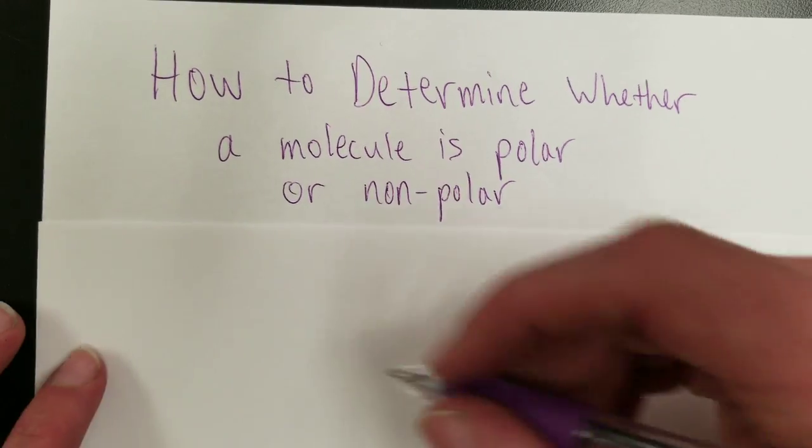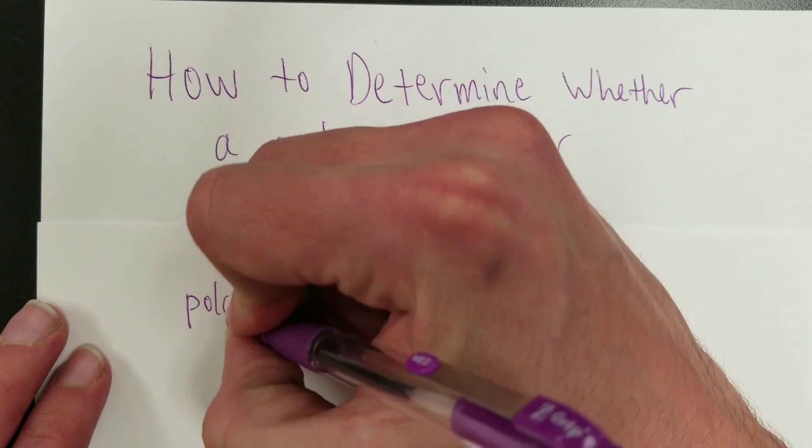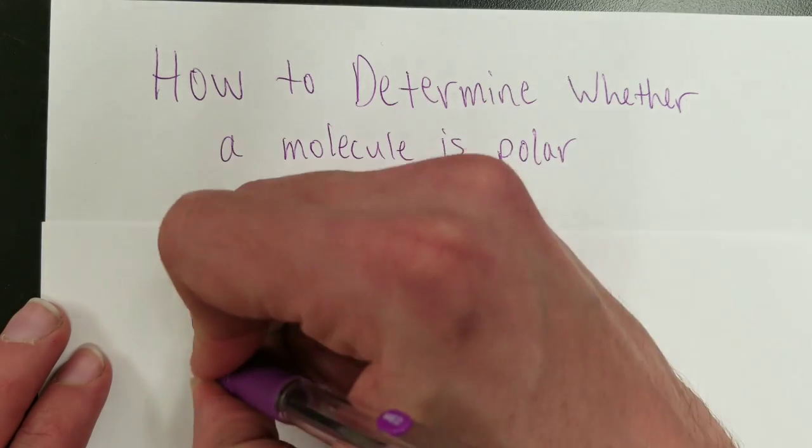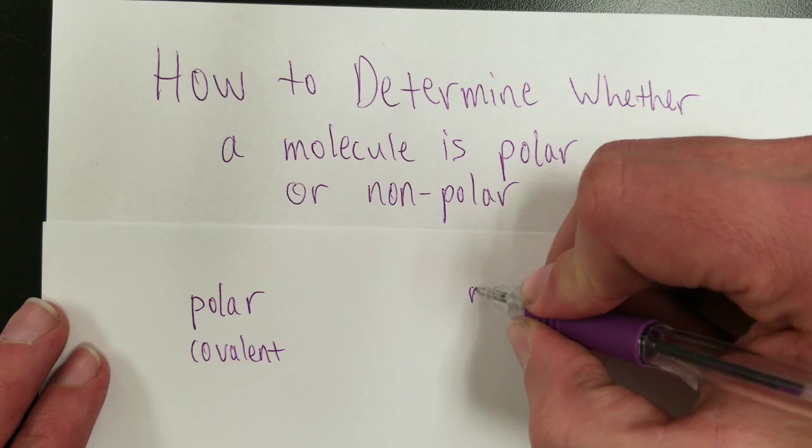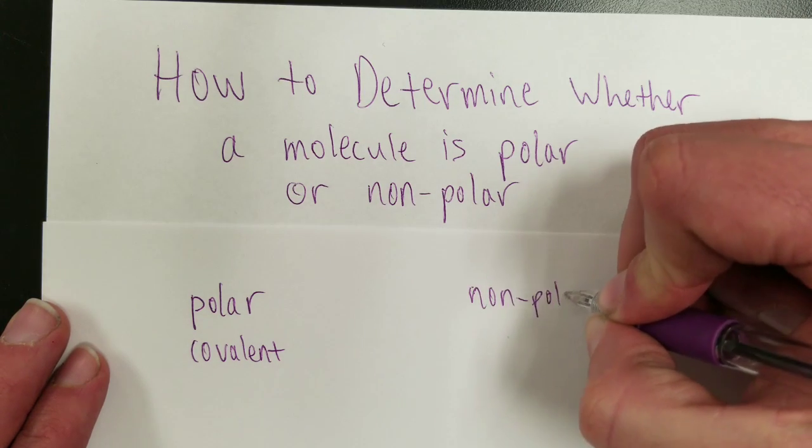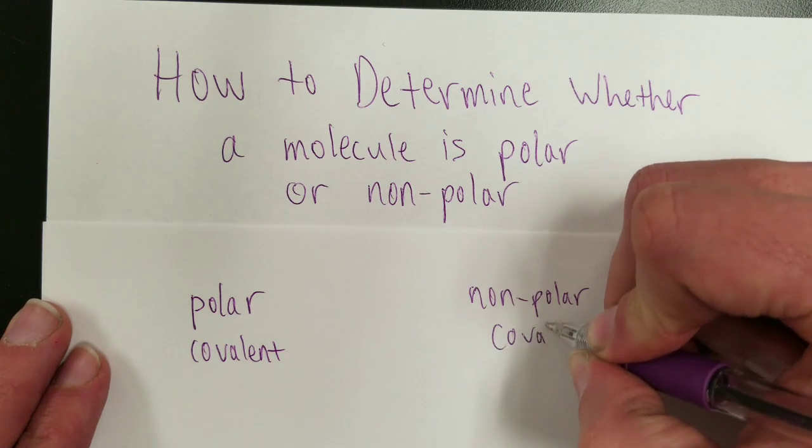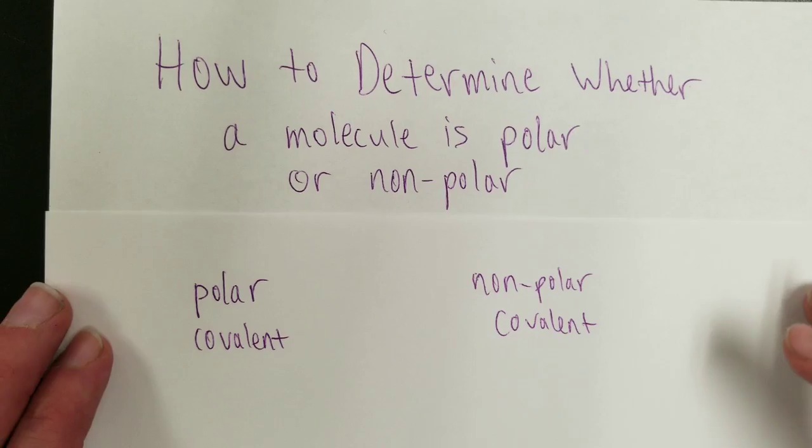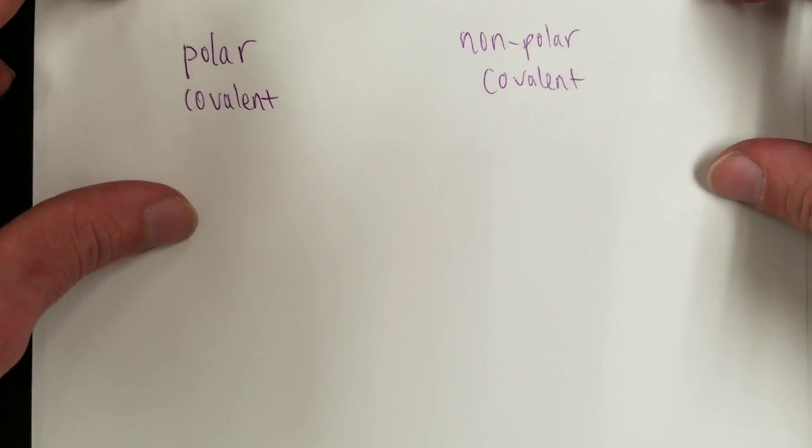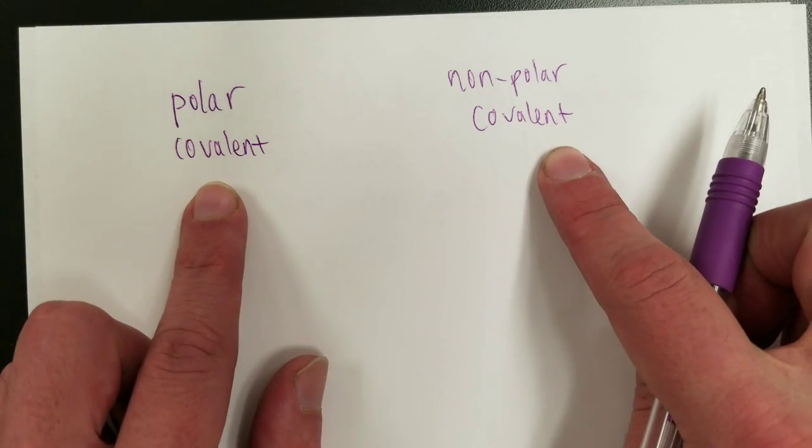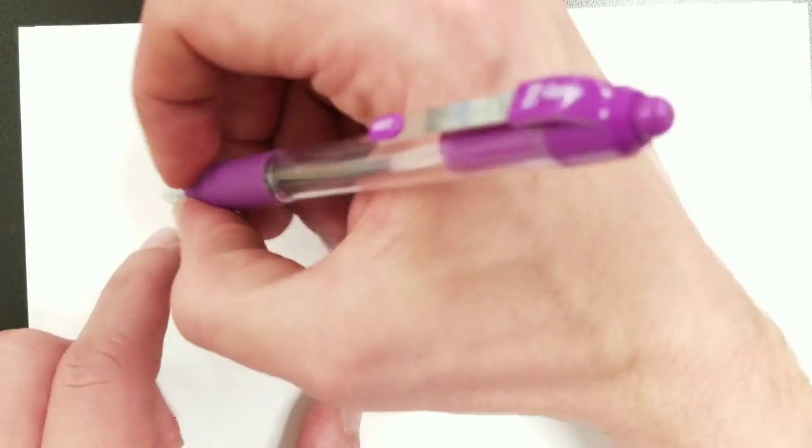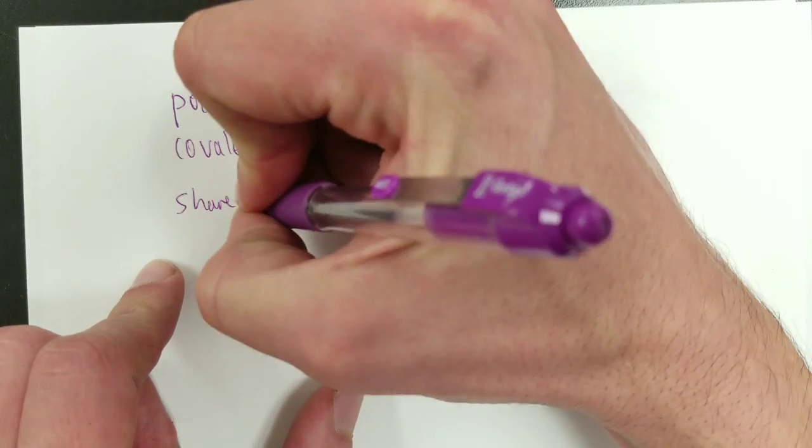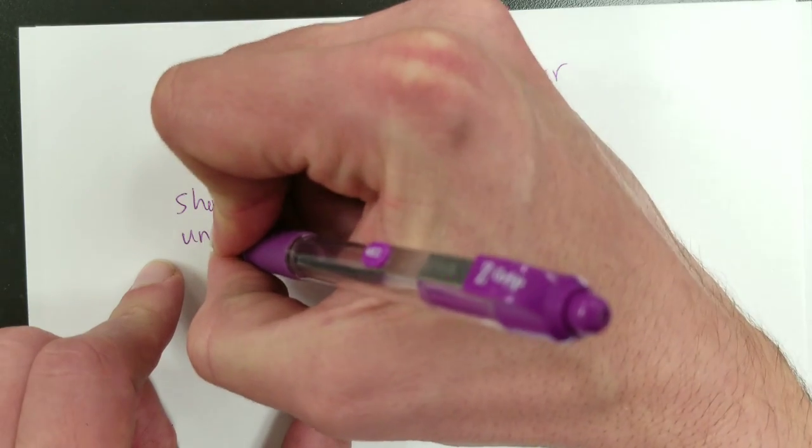So just as a reminder, polar is being short here for polar covalent, and it is the opposite of non-polar covalent. These are both types of chemical bonds. Covalent bonds share electrons. These both share electrons. However, these share their electrons unevenly.